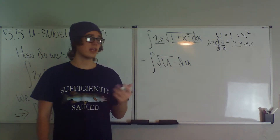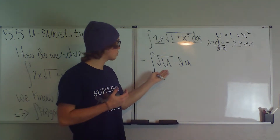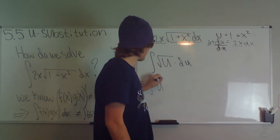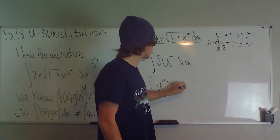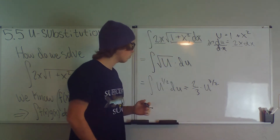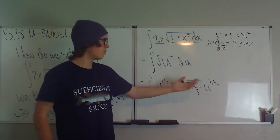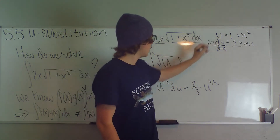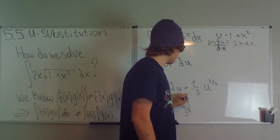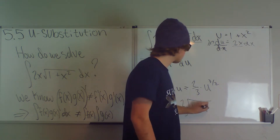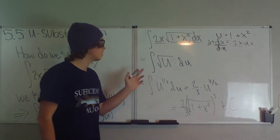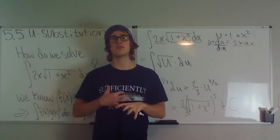We actually know how to do this one because the square root is just the power rule. So this is equal to the integral of u to the 1/2 du, which equals 2/3 times u to the 3/2. Now we have u's — we just take this u and substitute it back in, and we get that the integral equals 2/3 times (1 + x²) to the 3/2, plus C, because this is an indefinite integral.